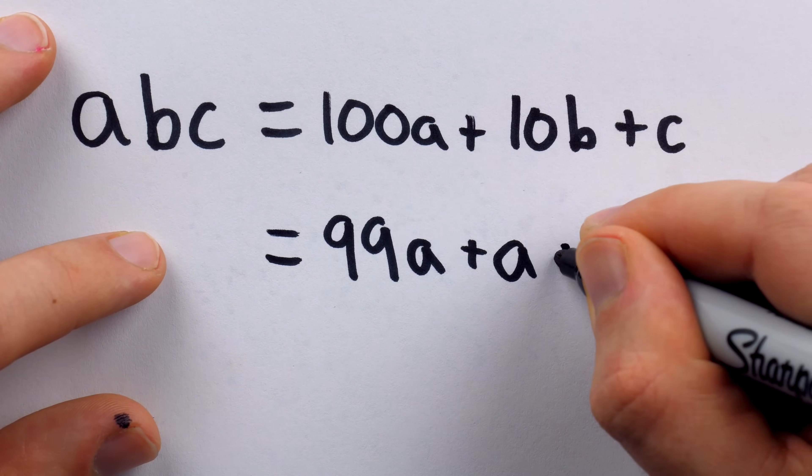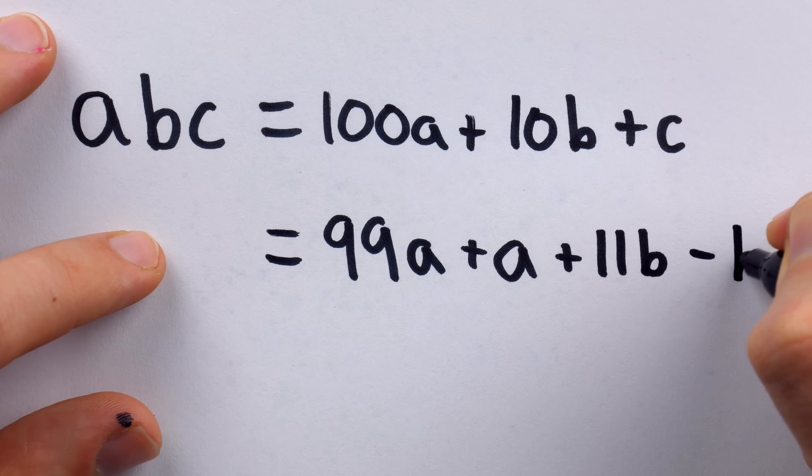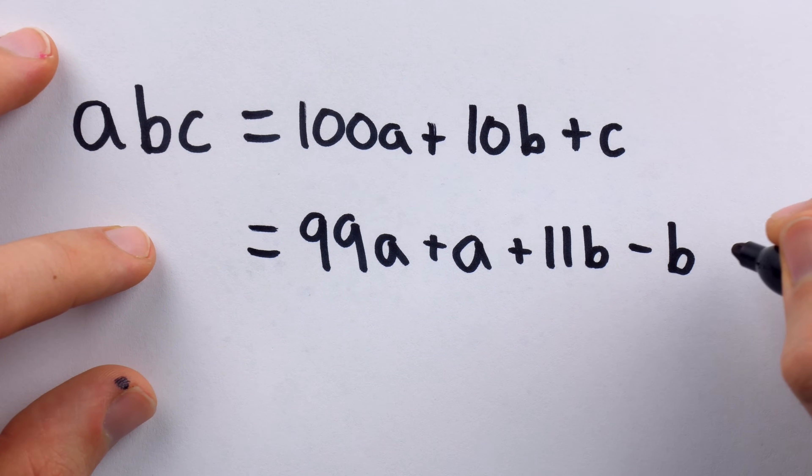And 10B, we can bump that up 1 to a multiple of 11, 11B. And then, of course, we would have to subtract B so that we, again, haven't actually changed the value of the expression. And then we'll just leave the plus C there at the end.